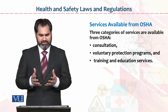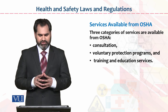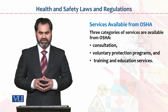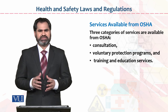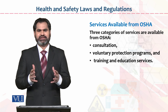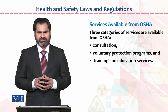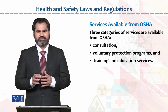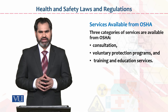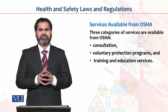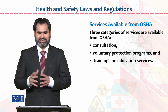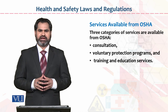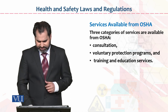Services available for OSHA: three categories of services are available. Number one, consultation; number two, voluntary protection program; number three, training and education services. The names are self-explanatory, but briefly — consultation means mutual consultation where state-owned agencies, industry, and organizations can make decisions together. Voluntary protection program means an organization can develop and implement a voluntary protection program by choice. Lastly, it is the responsibility to educate and train employees from lower-level management to top-level management.